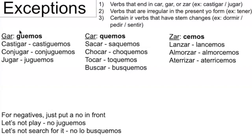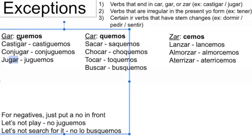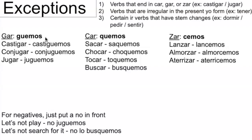Starting off with -gar: any verb that ends in -gar — 'castigar,' 'conjugar,' 'jugar' — you change the ending to -guemos. So for example, 'castigar' is 'castigemos.' You get rid of the -gar and add -guemos. 'Jugar' is 'juguemos' — that's probably the one you'll see most commonly. The reason is that the A changes to an E, so you're basically just adding a U — that's the only difference.